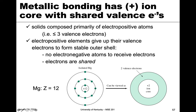Consider magnesium: it's an electropositive metal with an atomic number of 12, so 12 electrons and 12 protons. Everything except the two valence electrons forms the positive core, giving it a +2 charge, while the two electrons have a −2 charge. Those two electrons are free to be shared among the other metal elements. There are no electronegative atoms to receive the electrons, so they're shared — giving metallic bonding elements of both ionic (the ion core) and covalent (shared electrons), but it is its own distinctive bonding type.